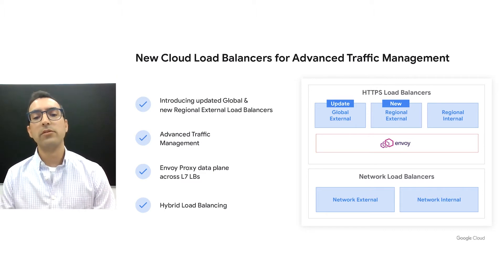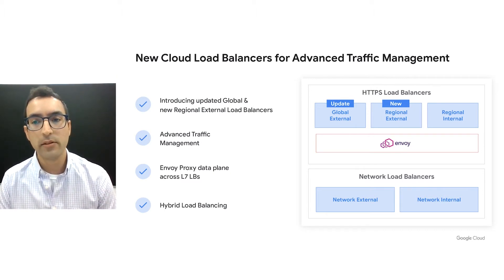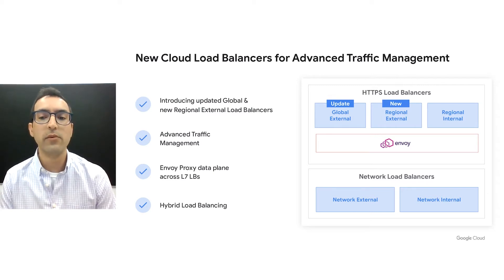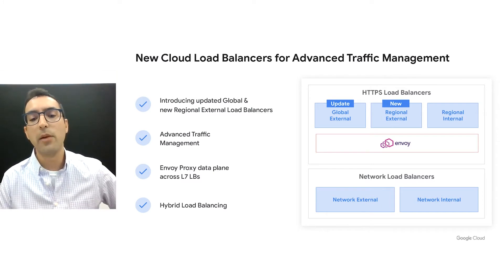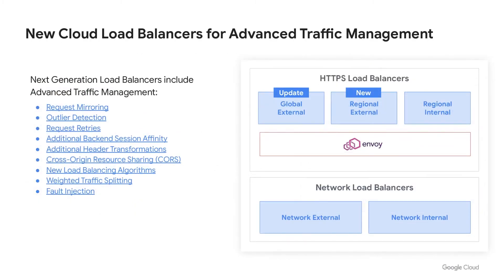Leveraging Envoy, these external load balancers provide new traffic management capabilities, such as advanced routing and traffic policies, so you can steer traffic with the flexibility required for complex workloads. In addition, we added support for hybrid load balancing. A few examples of the advanced traffic management capabilities are request mirroring for out-of-path feature validation, weighted traffic splitting for canary testing, new load balancing algorithms, and fault injection enabling reliability-enhancing validation such as chaos testing.